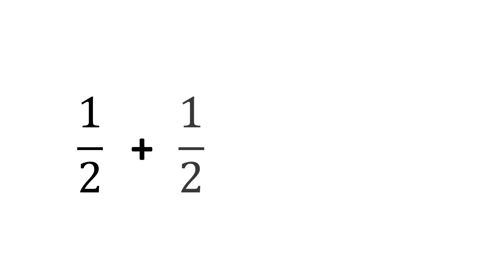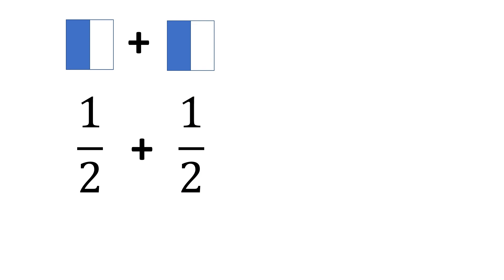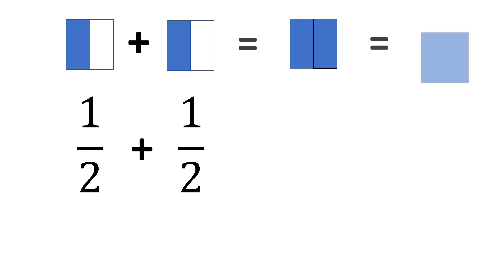For example, one half plus another one half. Before we solve this, let us look at the figures to visualize how these two look like, so you will understand the concept of adding fractions. We have one half plus one half. We combine them, and the result will look like a whole — without a slice. So the expected answer is one.